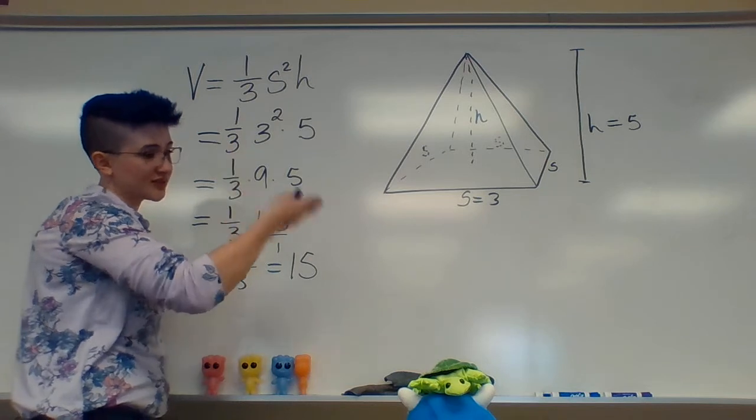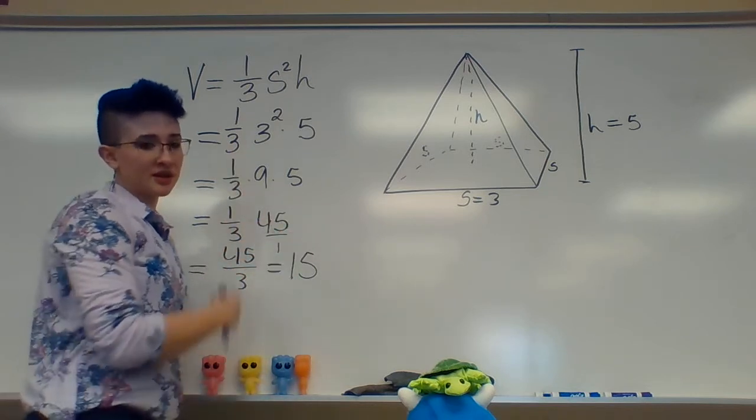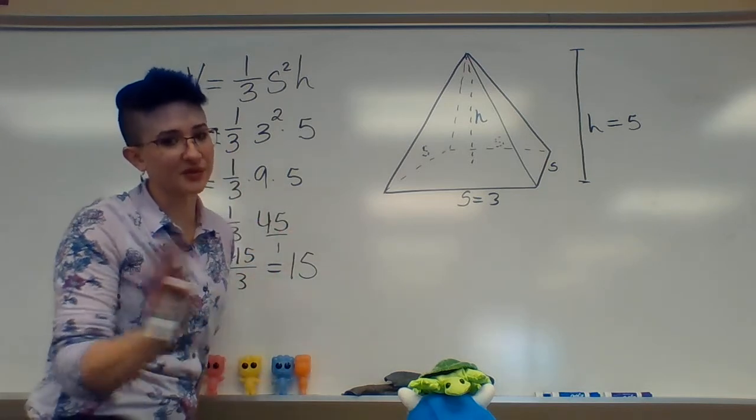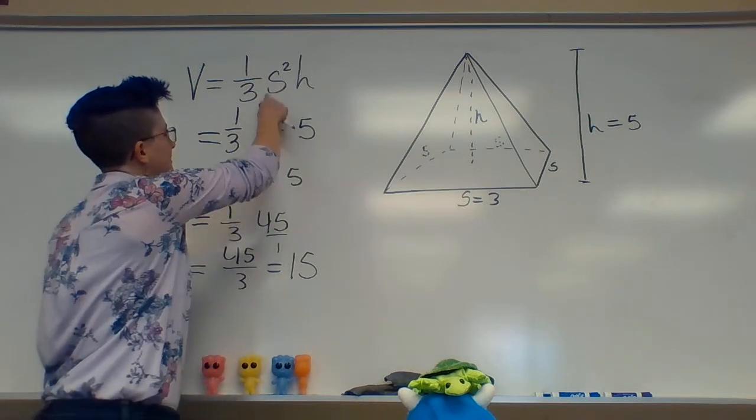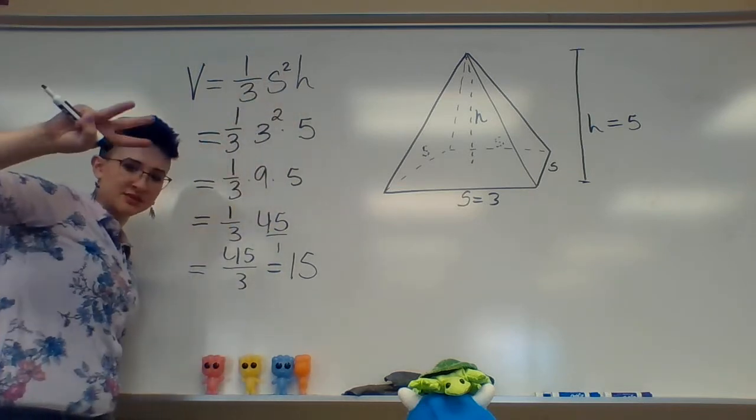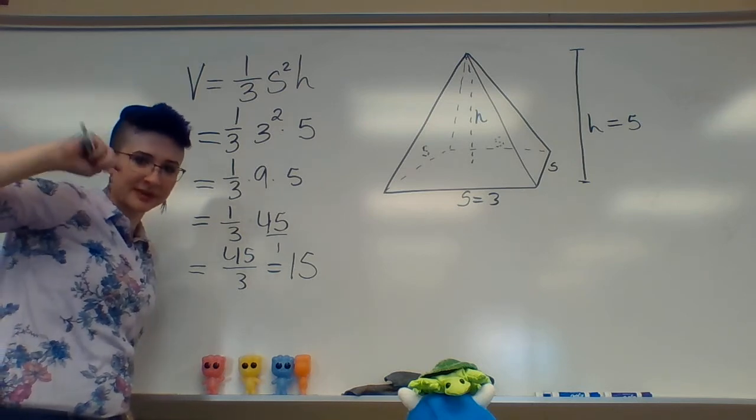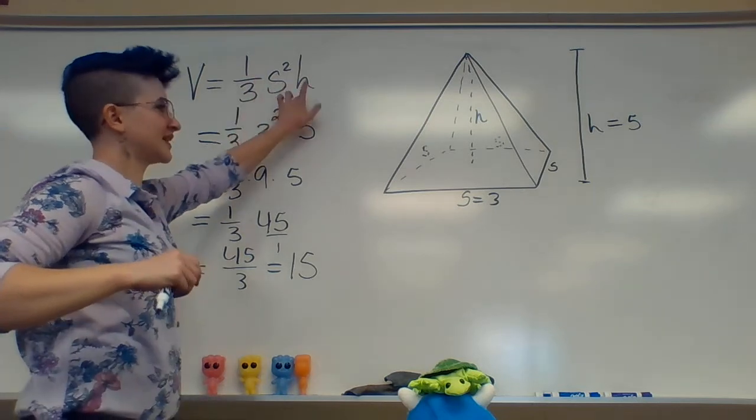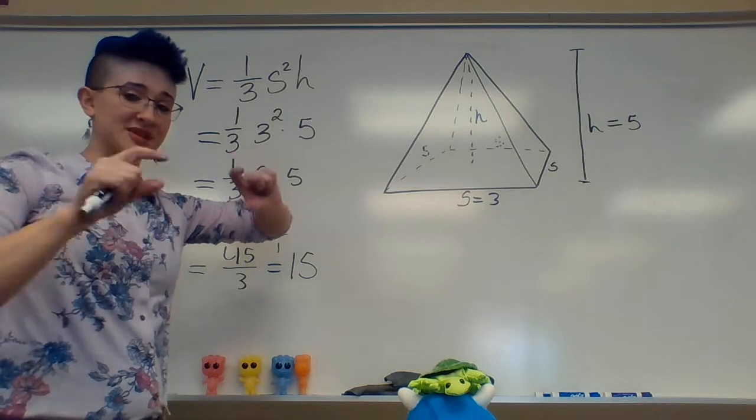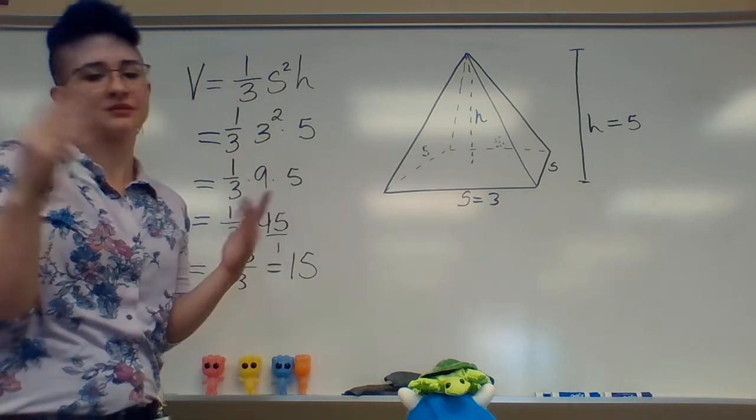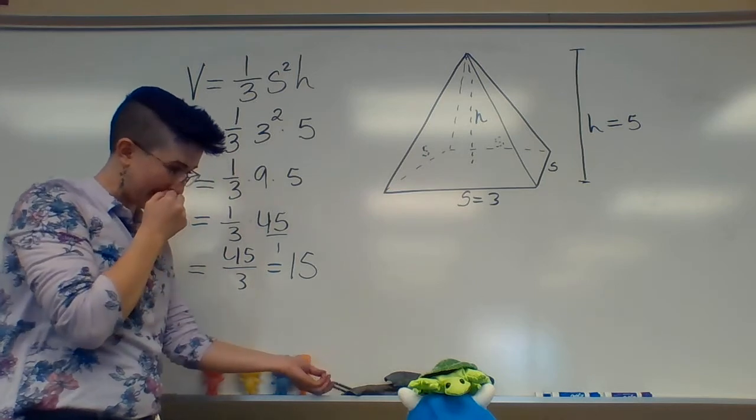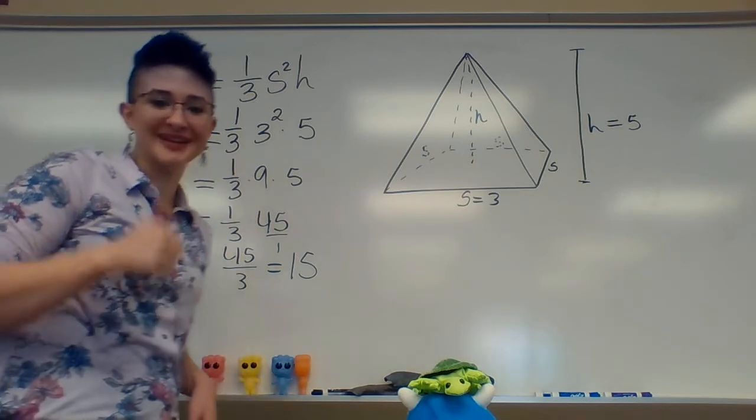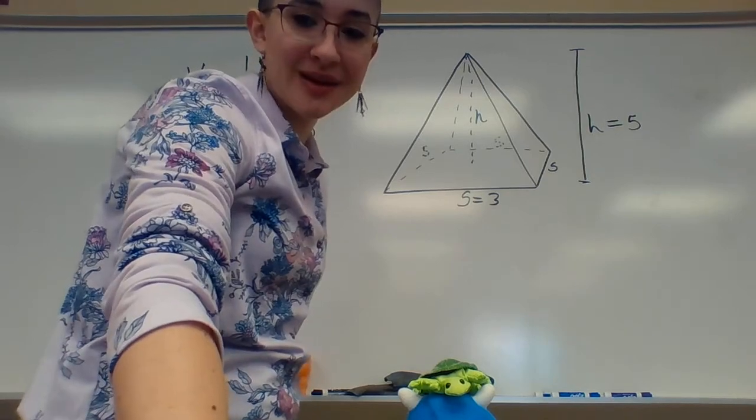So the volume of this is 15, so 15 cubic feet. Everything with volume is going to be cubic something, just because I'm multiplying one, two, three - three times something. In this case it was sides twice and then height. Because I did the multiplication three times, it's cubic, which is how it works. Okay, moving on to the next one. I'll see you there. Goodbye, bye.